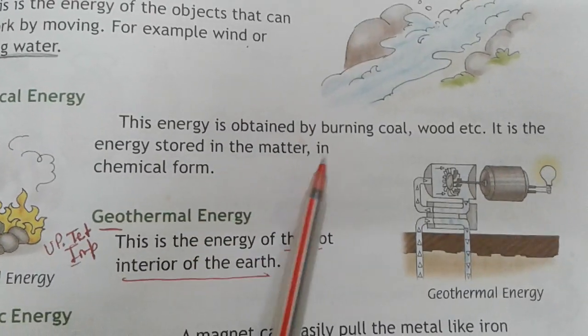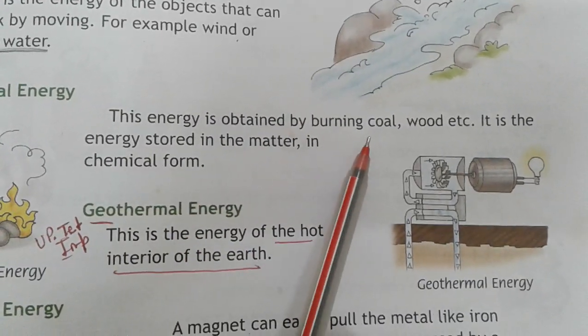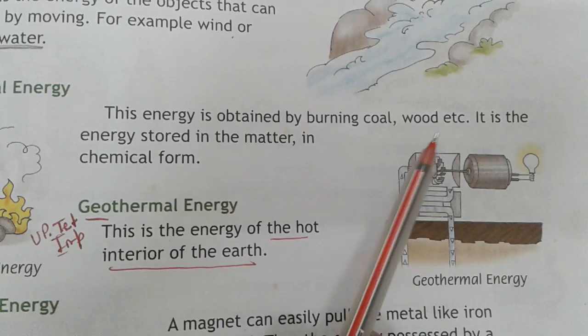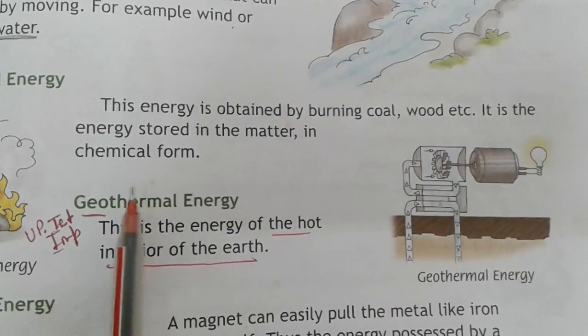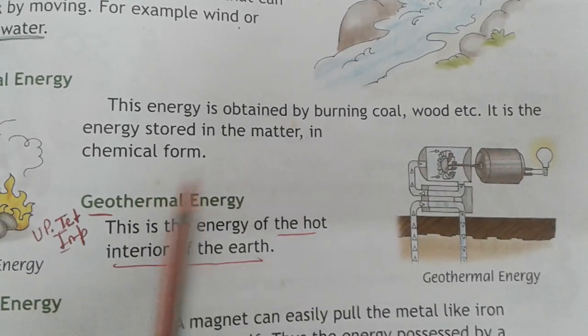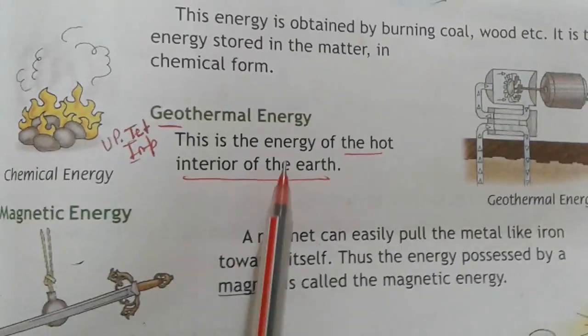Chemical energy: this energy is obtained by burning coal. It is the energy stored in matter in chemical form.